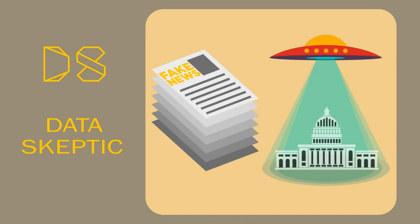Today we're going to talk about spam detection, especially with the Naive Bayes classifier. I know you don't know about Naive Bayes yet. What do you know about spam detection? Email programs claim to use it to filter out spam. What is spam? It doesn't stand for anything — it's a name that somebody assigned to a certain type of undesirable email. And the non-spam is actually called ham. Here we're going to talk about the algorithm.